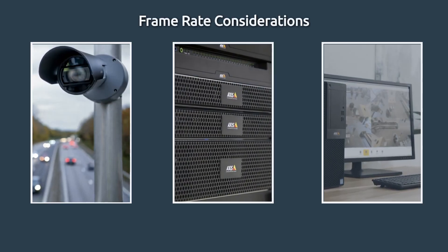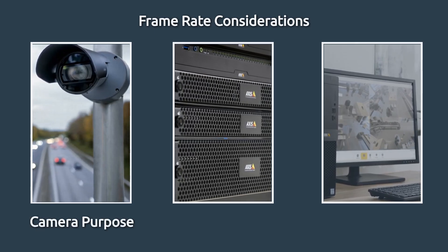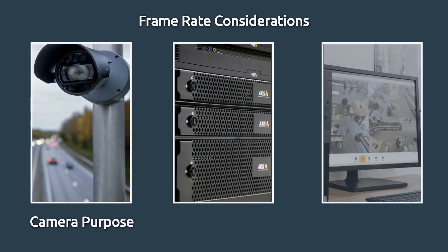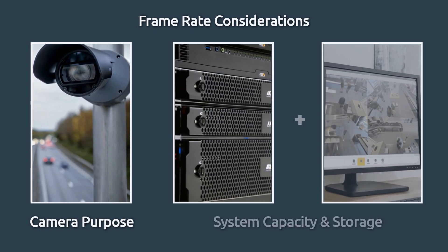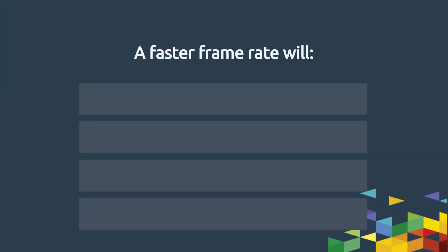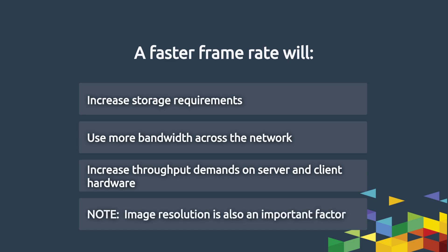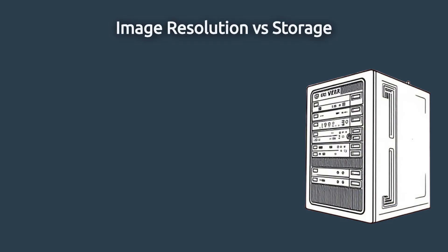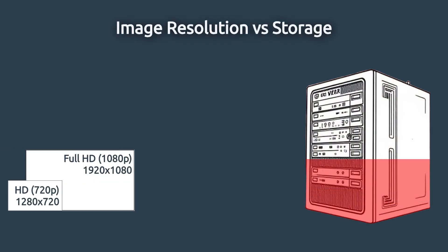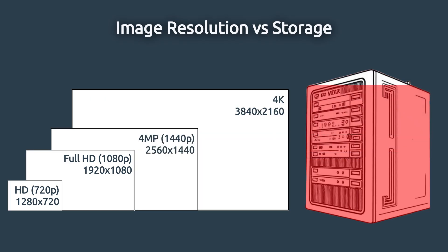There are two key questions to answer when deciding on a suitable frame rate. Firstly, what video frame rate is sufficient for the purpose of my camera? And secondly, how much capacity do I have on my system, or how much do I want to spend on this? You need to think about the fact that faster frame rates will require more storage space, more bandwidth, and more throughput on your server and viewing PC. This question also goes hand-in-hand with what image resolution, or image size, you are looking to run. Running a high frame rate in combination with a high image resolution will use a significant amount of resource and can become very costly, so it is important to make careful considerations.